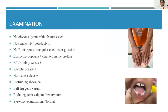There were rachitic stigmata in the form of enamel hypoplasia, nodding wrist, rachitic rosary, Harrison's sulcus, protuberant abdomen, and genu valgum in the lower limbs. There were lower digit abnormalities and systemic examination was otherwise essentially normal.